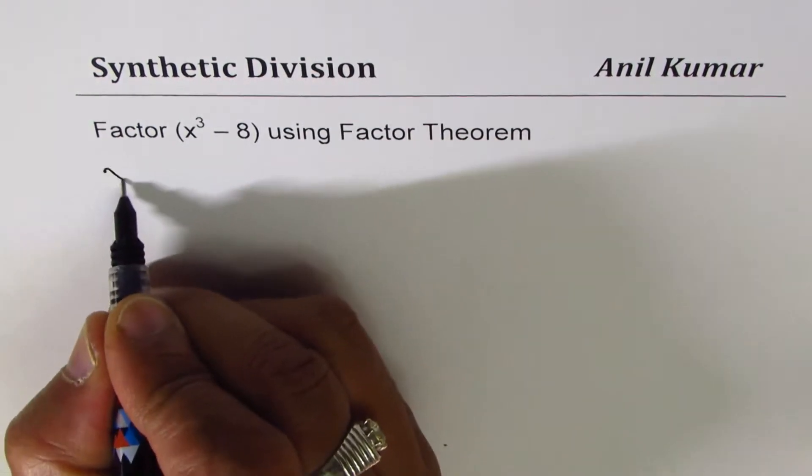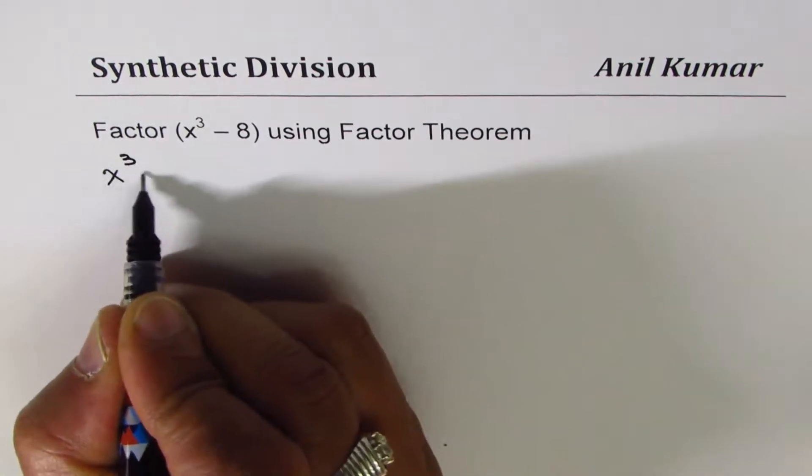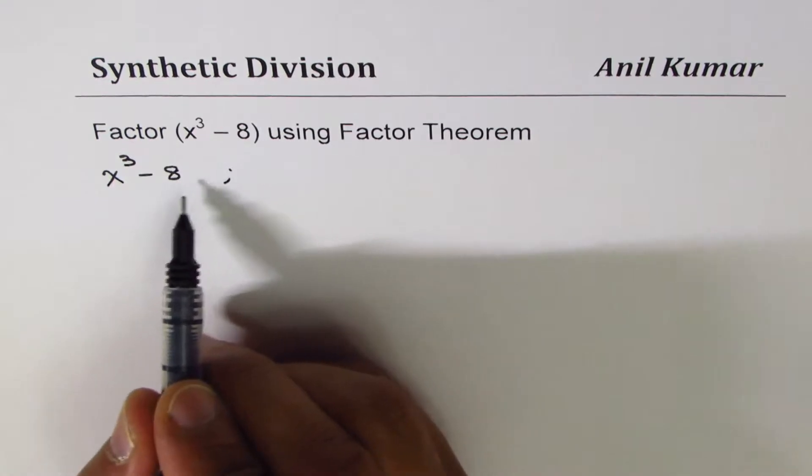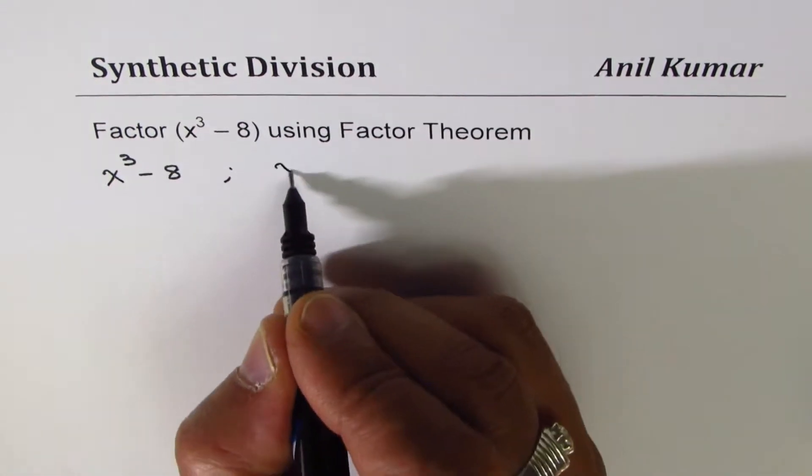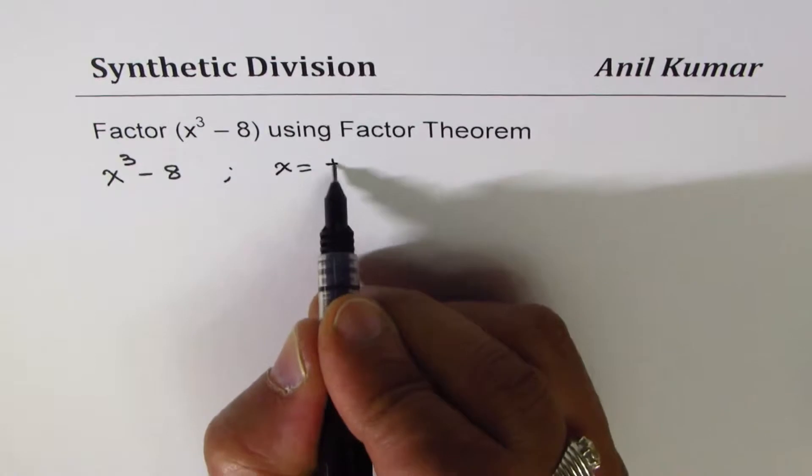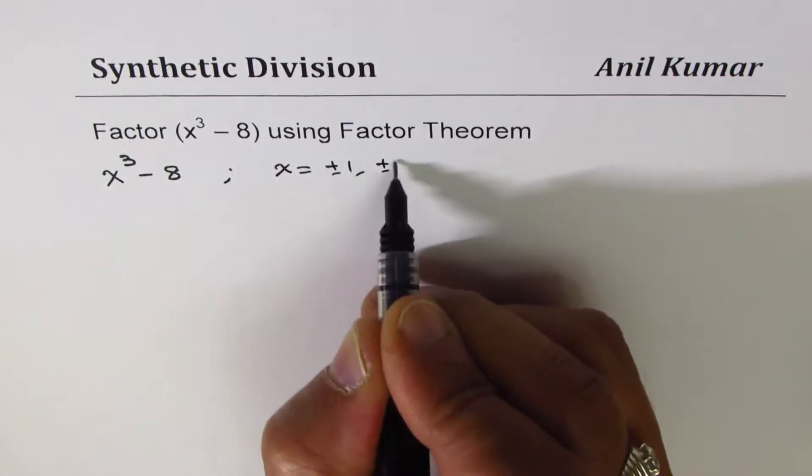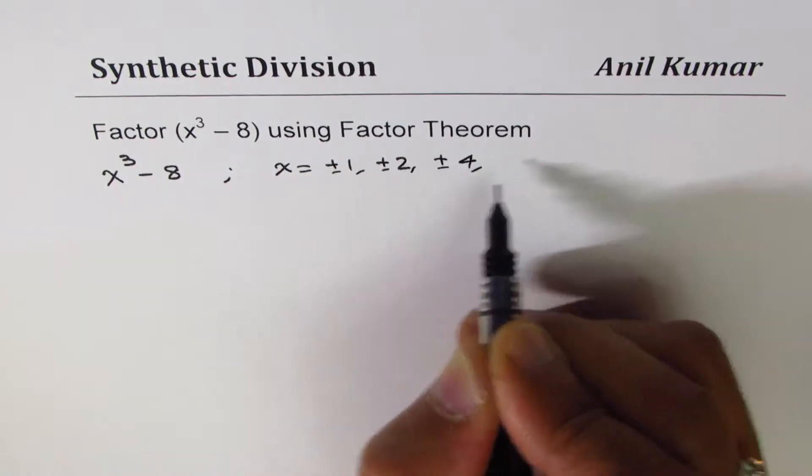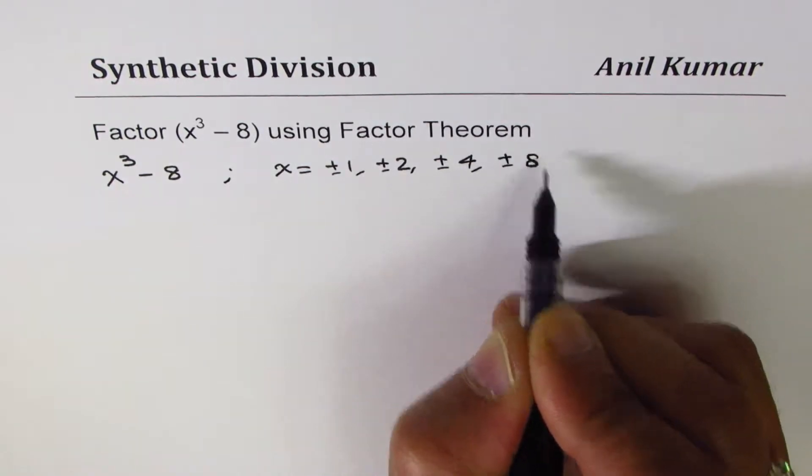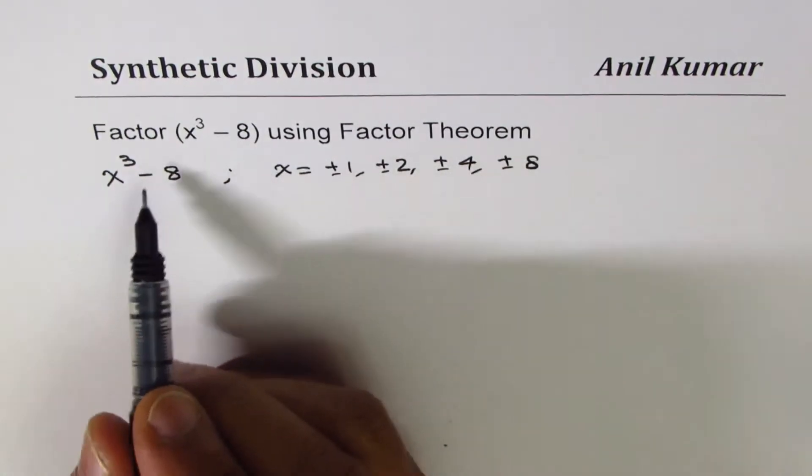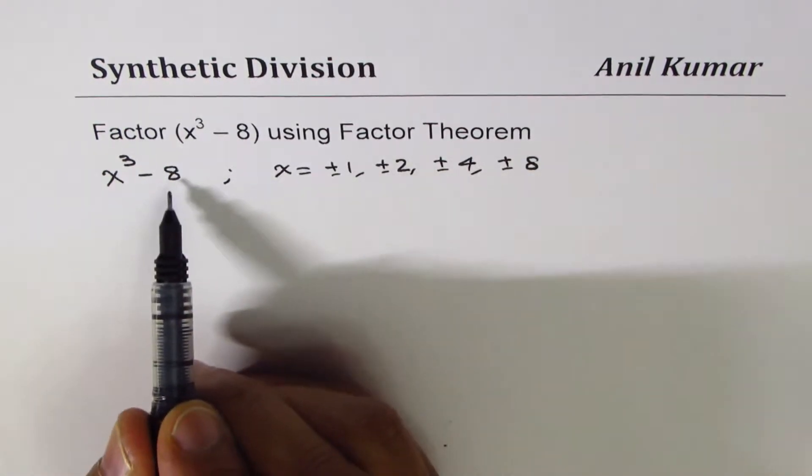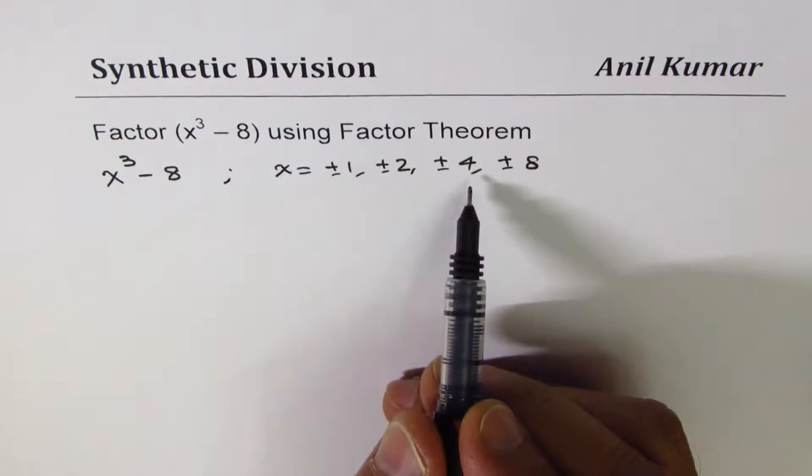So we need to factor x cube minus 8. Now, possible factors could be with x value of plus minus 1, plus minus 2, plus minus 4, or plus minus 8. So these are possible factors for this particular polynomial. All the factors of 8 could be possible factors.